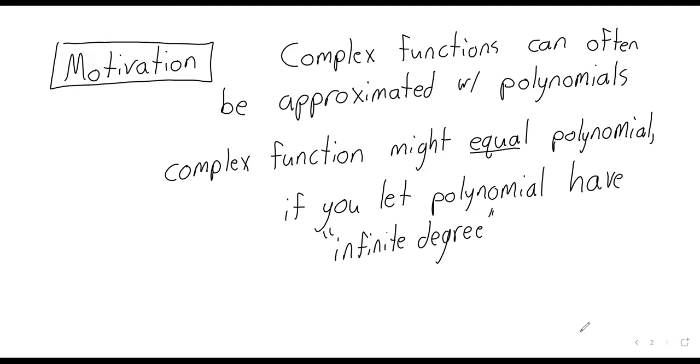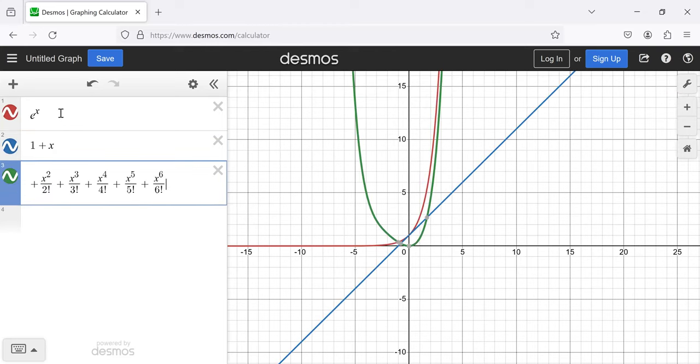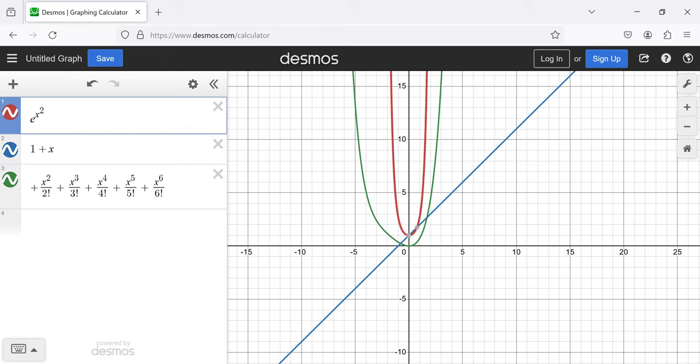The approximation seems to get better and better as our degree gets bigger and bigger. So if our degree were infinite, if instead of a polynomial we had a power series, we might be able to say that something like e to the x equals an infinite degree polynomial equals its power series. Even putting that aside, this idea of approximation is an extremely powerful tool.